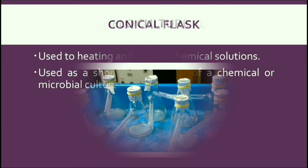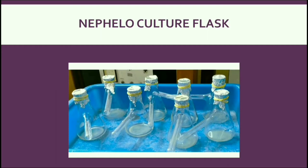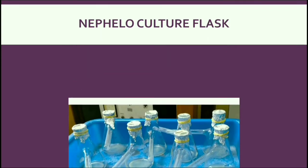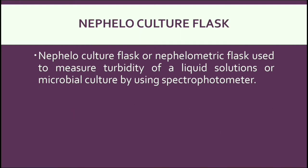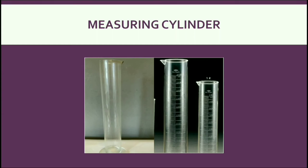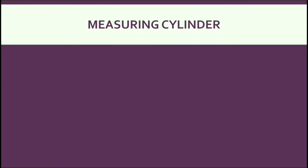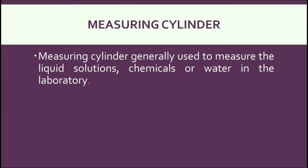Now, Nephelometric flask. These are similar to a conical flask but have a side arm which looks like a test tube. It is used to measure the turbidity of a liquid or microbial culture using a spectrophotometer. Next, Measuring Cylinders. These are cylindrical glass containers generally used to measure the volume of liquid solutions, chemicals, or water in the lab for further experiments.